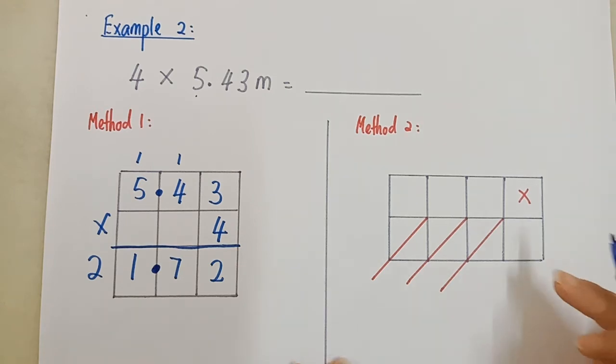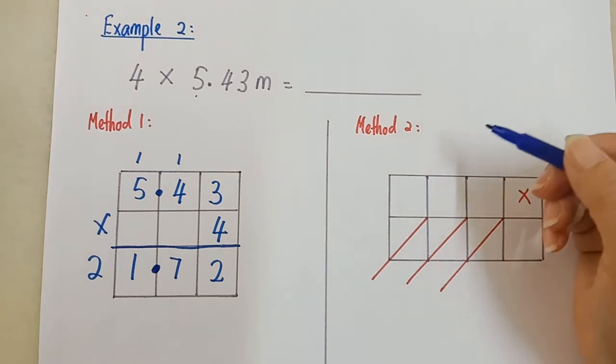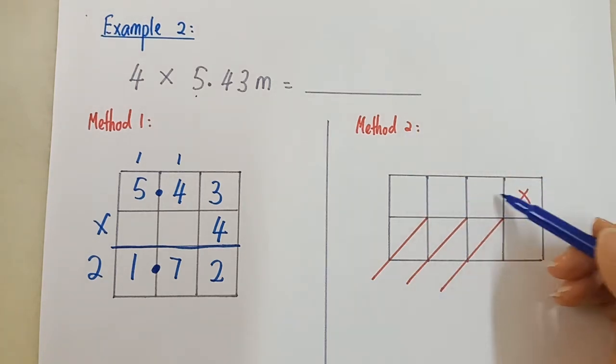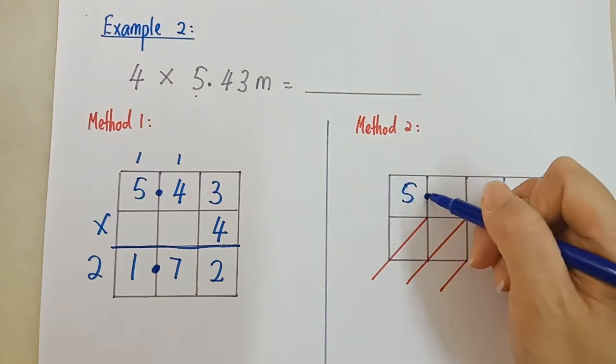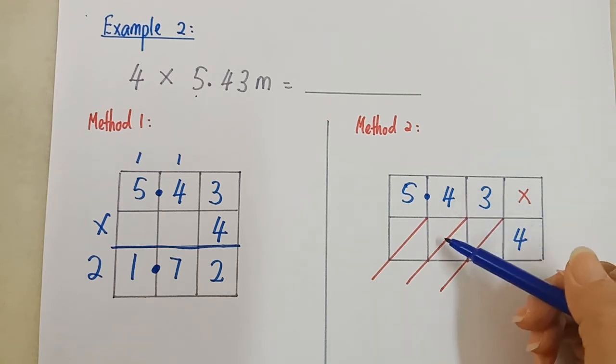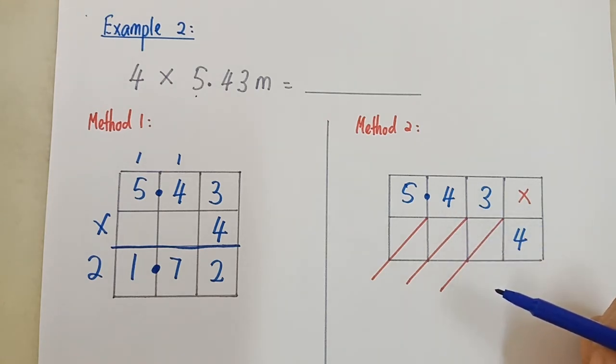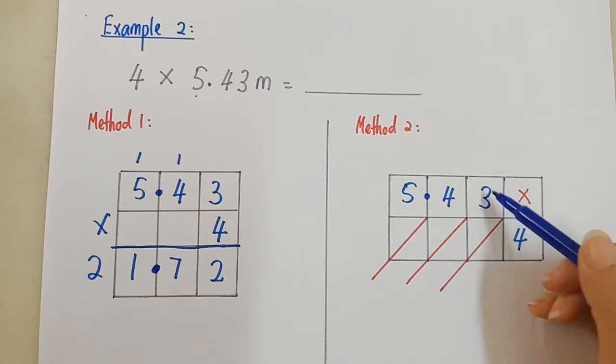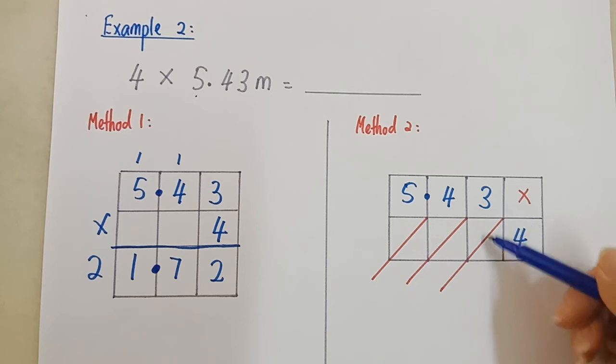Now I'm using lattice method. Cara kedua. Sama juga yang banyak digit susun melentang. 5.43 times 4. Isikan sifir dalam setiap petak. Boleh mula di, dari mana-mana petak. Tak ikut giliran pun tak apa. Now I want to start from back first. Cikgu nak mula dari petak ini. Petak ini, 3 times 4, 3 kali 4, 12 kan? 12. 1, 2.